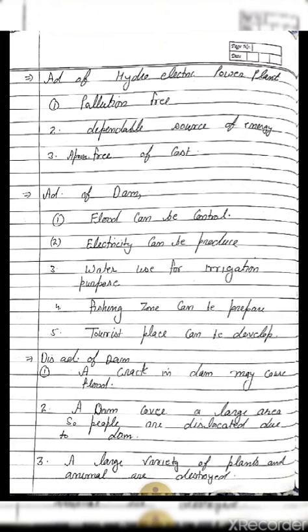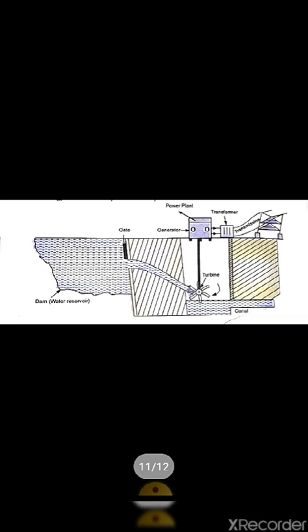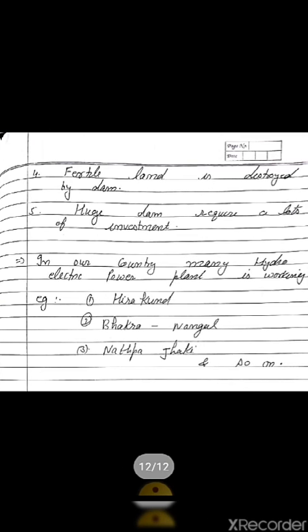Disadvantages of a dam: if there is a crack in the dam, it may cause flooding. A dam covers a large area, so people living in that area have to be displaced. A large number of plant and animal varieties are destroyed. Fertile land can be destroyed. A large dam requires a lot of economic investment — they are costly at the start. So overall, there are many advantages but disadvantages also.